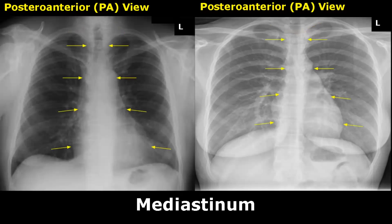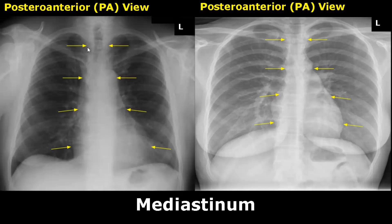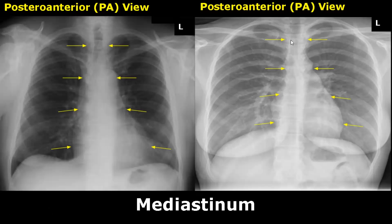The mediastinum is the space between the lungs in the midline of the chest. The trachea, esophagus, thymus, heart, major blood vessels, phrenic and cardiac nerves, lymph vessels, and lymph nodes are all part of the mediastinum.